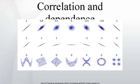The population correlation coefficient ρ(x, y) between two random variables x and y with expected values μx and μy and standard deviations σx and σy is defined as where E is the expected value operator, cov means covariance, and cor is a widely used alternative notation for the correlation coefficient. The Pearson correlation is defined only if both of the standard deviations are finite and non-zero. It is a corollary of the Cauchy-Schwarz inequality that the correlation cannot exceed one in absolute value.